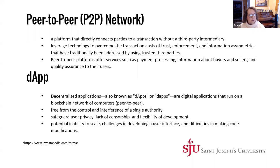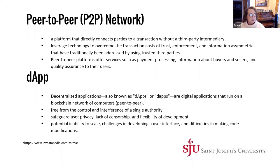Let me provide a few definitions to help understand what Bitcoin and Ethereum have done, since they're the ones we'll focus on. A peer-to-peer network connects parties — you and I can both be part of one. It offers services like payment processing, information about buyers and sellers, and quality assurance. Peer-to-peer networks are critical to blockchain because that's how we distribute our blocks.